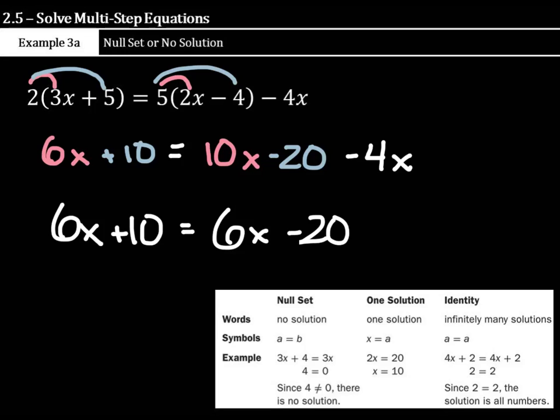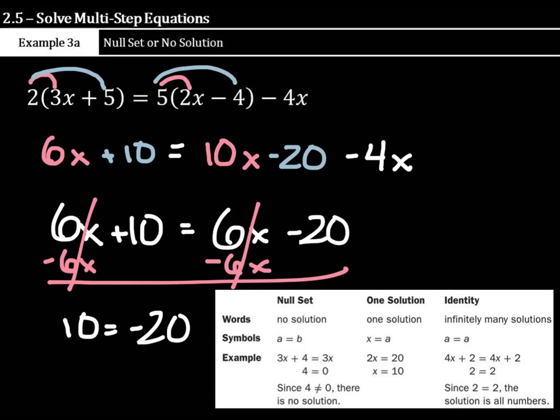Now, when you go to subtract the 6x from both sides in order to simplify this thing, you'll get something similar where that cancels and that cancels, but the difference becomes 10 equals negative 20. And before you start to go, wait a minute, I did something wrong because there's no way that 10 equals negative 20, realize this is one of your types of equations where you have no solution because, well, like down here where 4 equals 0, well, that can't be the case, so there's no solution to the equation.